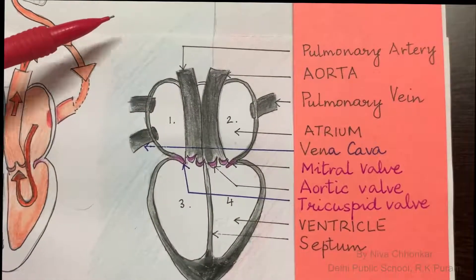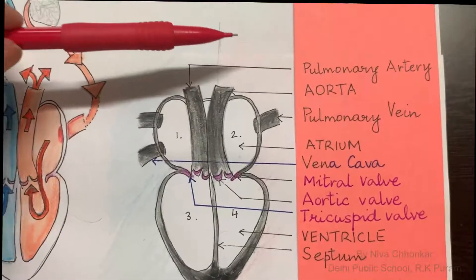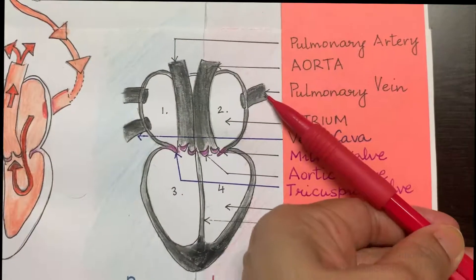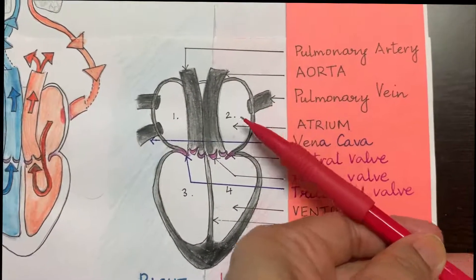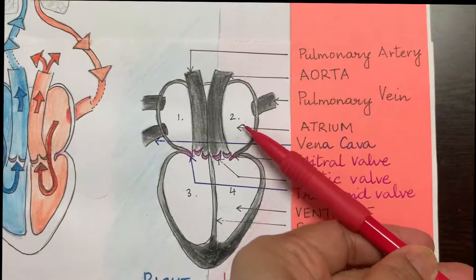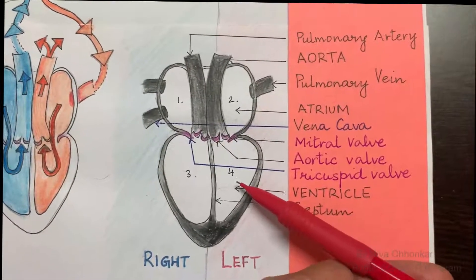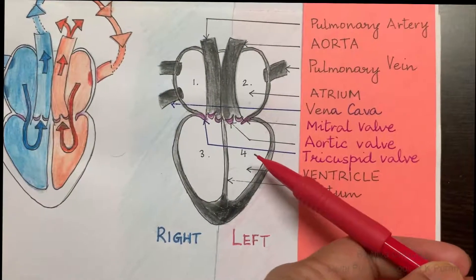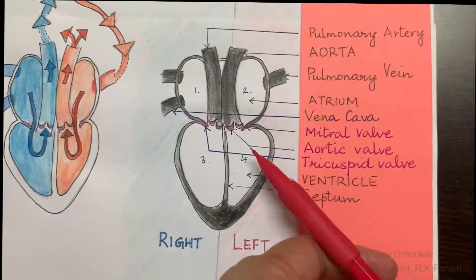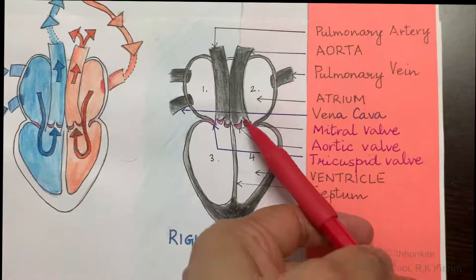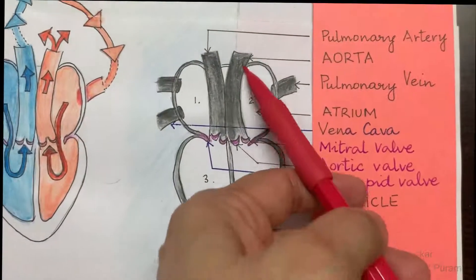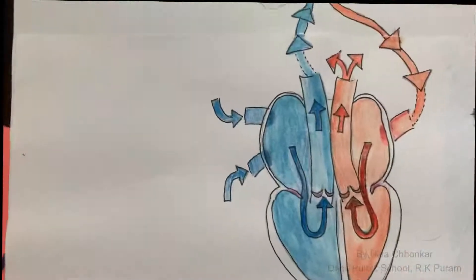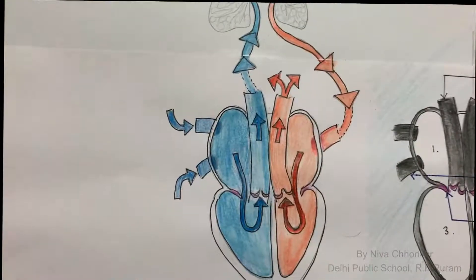This blood reaches the lungs, and oxygenated blood then enters the heart through the pulmonary vein, reaching the atrium, and from the atrium again into the ventricle. When the ventricles contract — because the heart is made up of cardiac muscles — the blood is forced into the blood vessel called the aorta, and from the aorta it is circulated to the entire body.